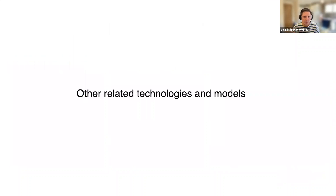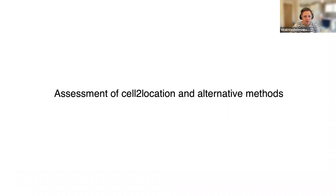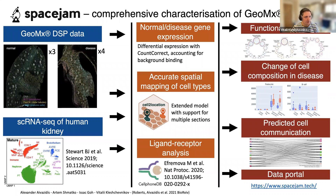Cell2location is not just for Visium — it also applies to other technologies. We show it can be applied to SlideSeq, and we are working on scalability improvements for SlideSeq and the upcoming Visium HD from 10x. We map hippocampal and cortical neurons in the mouse brain. Cell2location can also be adapted to technologies with different noise properties; for example, we modified it to work with NanoString GeoMx DSP data.